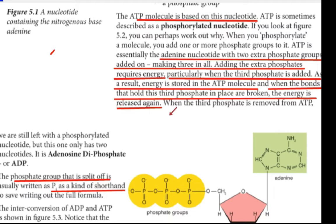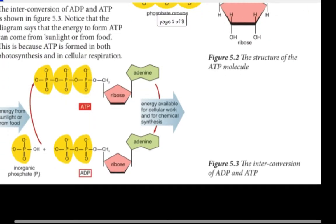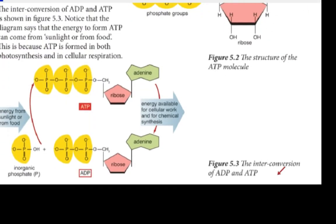When the bonds that hold the third phosphate in place are broken, the energy is released again. The inter-conversion of ADP and ATP involves the addition or removal of this phosphate group.